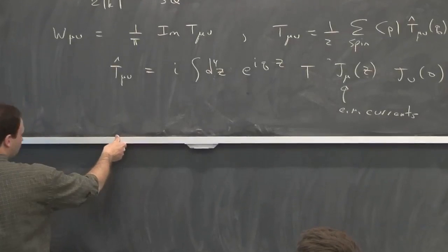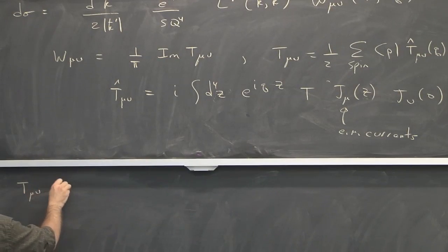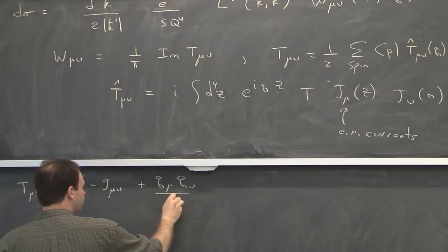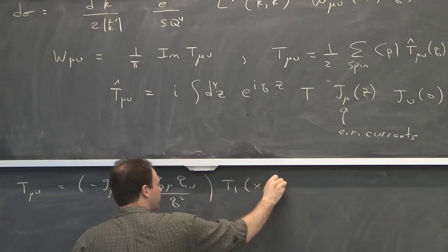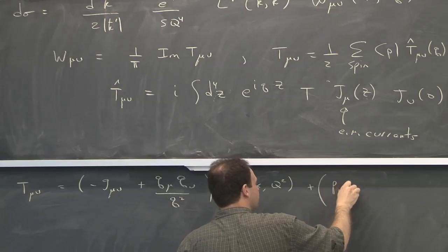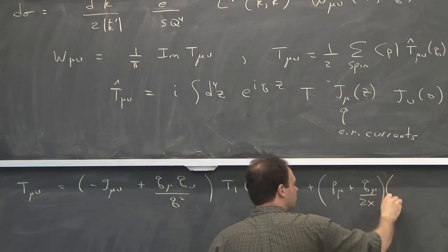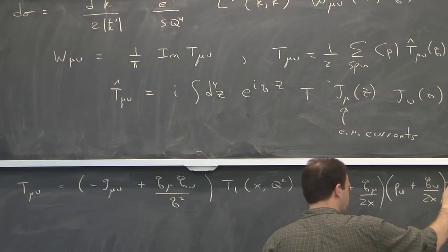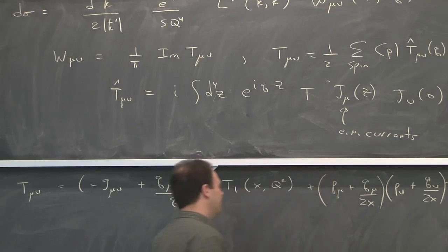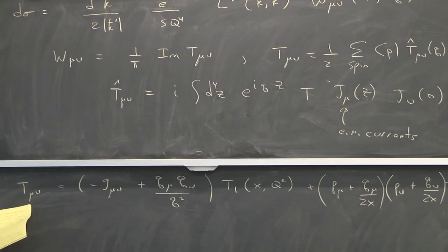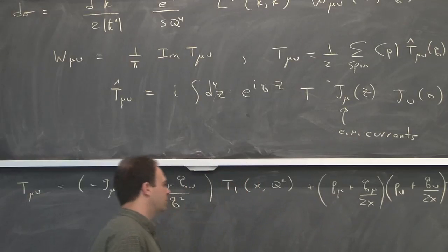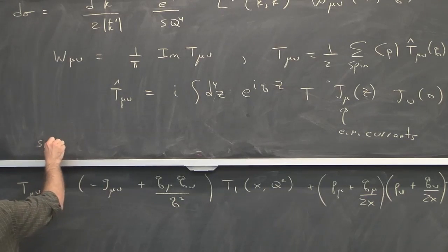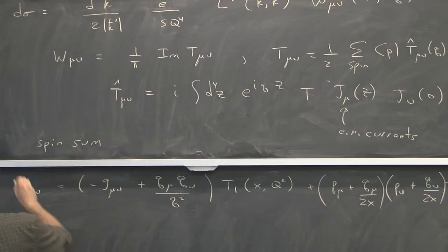So for this T mu nu, we can also use current conservation and decompose it into two pieces. So this is a classic thing that we do in DIS. And nothing about the fact that we're using effective theory really changes doing this. What you're after, the effective theory is calculating these T's, which are the coefficients. And this part is all standard stuff for any analysis of DIS. So if you're not familiar with it or you don't remember it, it's actually not that important.